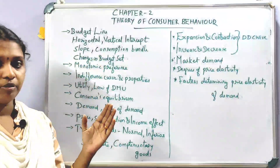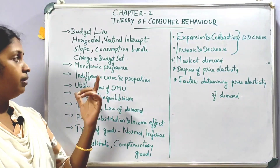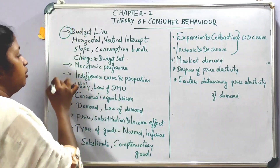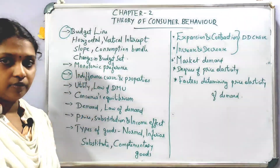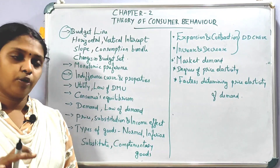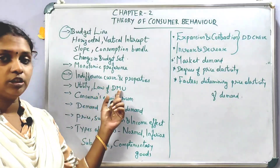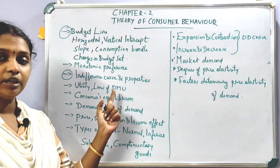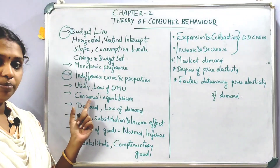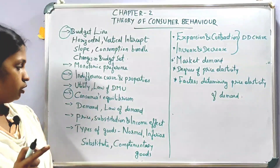The next topic is monotonic preference. Then there is the indifference curve and its properties, which is a very important topic. Also covered are utility and the Law of Diminishing Marginal Utility (DMU).